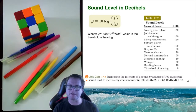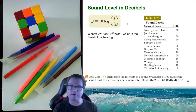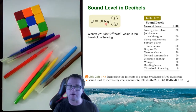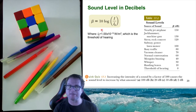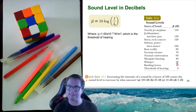Engineers often use the decibel scale, which uses a logarithmic relation. The sound level in decibels is defined as β = 10 log(I / I₀), where I₀ = 1×10⁻¹² W/m² is the threshold of hearing. This allows conversion between intensity and dB. Examples range from a whisper at 30 dB to a jackhammer at 150 dB.